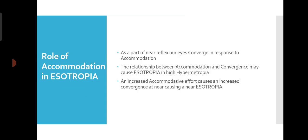Let's discuss the role of accommodation in Esotropia. As a part of the near reflex, our eyes converge in response to accommodation. Whenever there is any accommodative demand, convergence also acts along with it — this is called Accommodative Convergence. The relationship between accommodation and convergence may cause Esotropia in the case of high hypermetropia, as an increased accommodative effort causes increased convergence at near, resulting in near Esotropia.